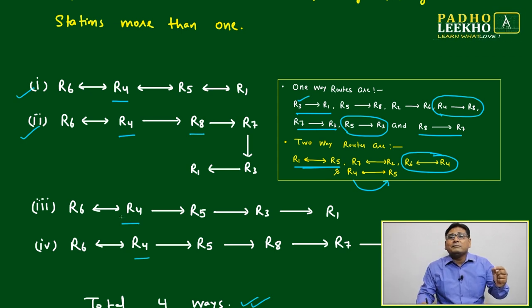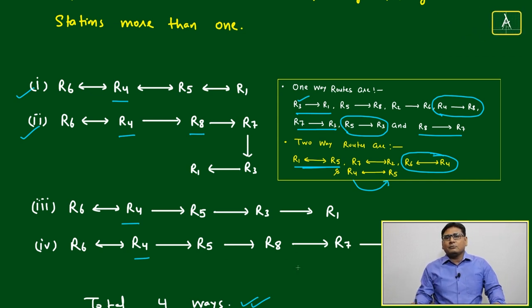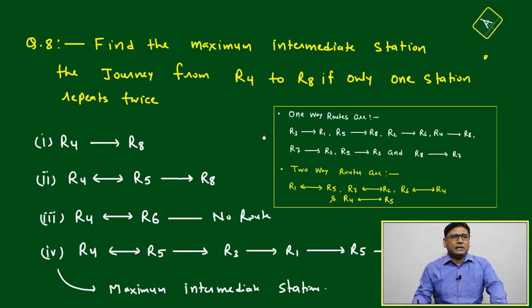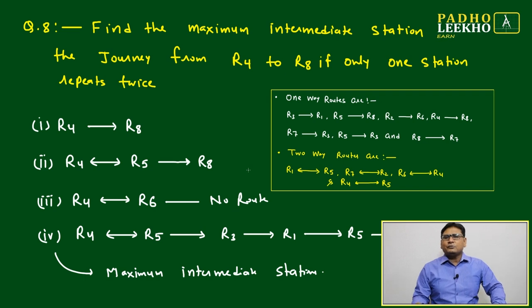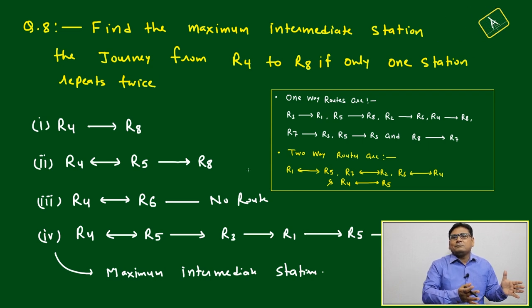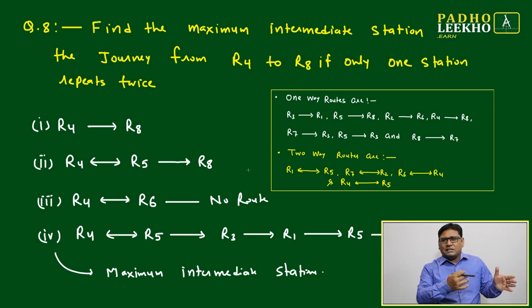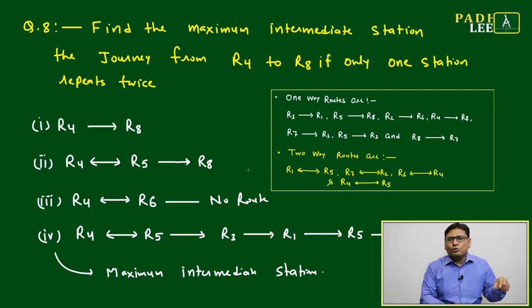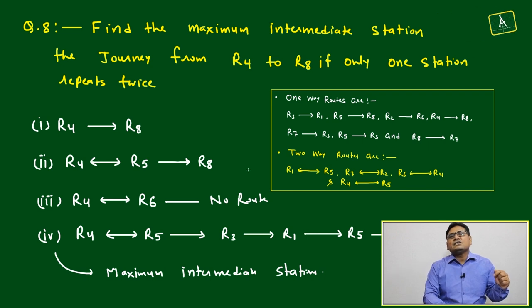Questions may also ask which city is mandatorily crossed, with options like R4, R5, R8, and 'all of the above.' These are different ways of asking the same question, designed to confuse you. In competitive exams, the examiners' target is to make you confused, consume your time, and add pressure. Your target is not to get confused.